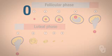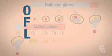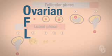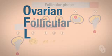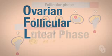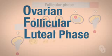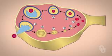The abbreviations are OFL — the ovarian follicular luteal phase. For the ovarian cycle, this diagram is going to be very important. You want to have this diagram set aside while we're going through the next slide.